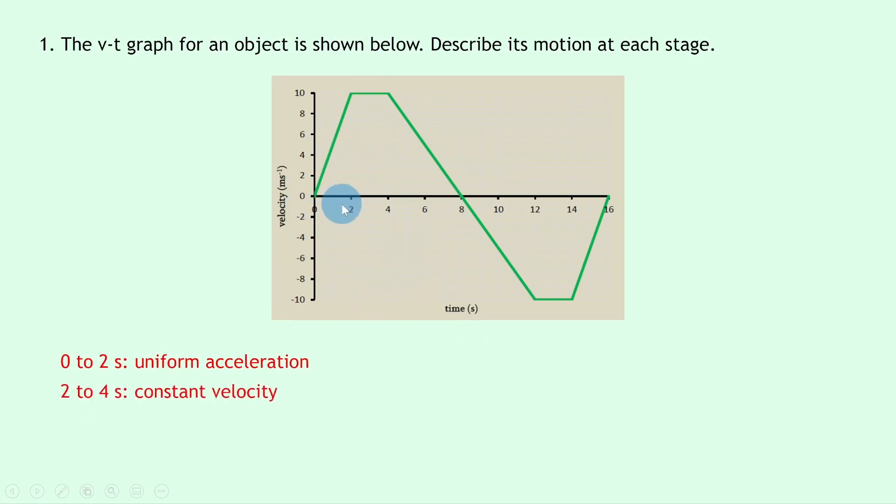We then have from two to four seconds along here, that is our constant velocity. And then from four to eight seconds down here we have a uniform deceleration until the object comes to rest.